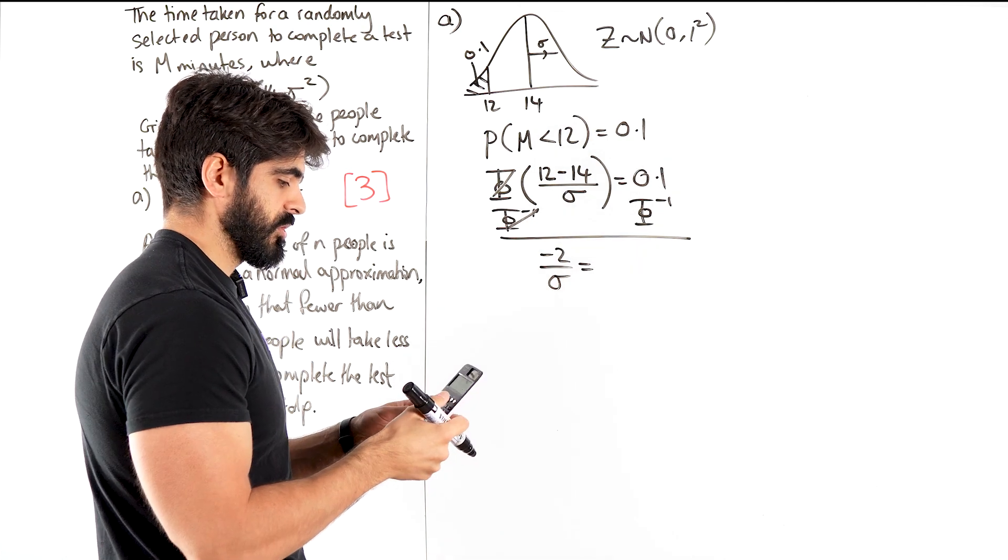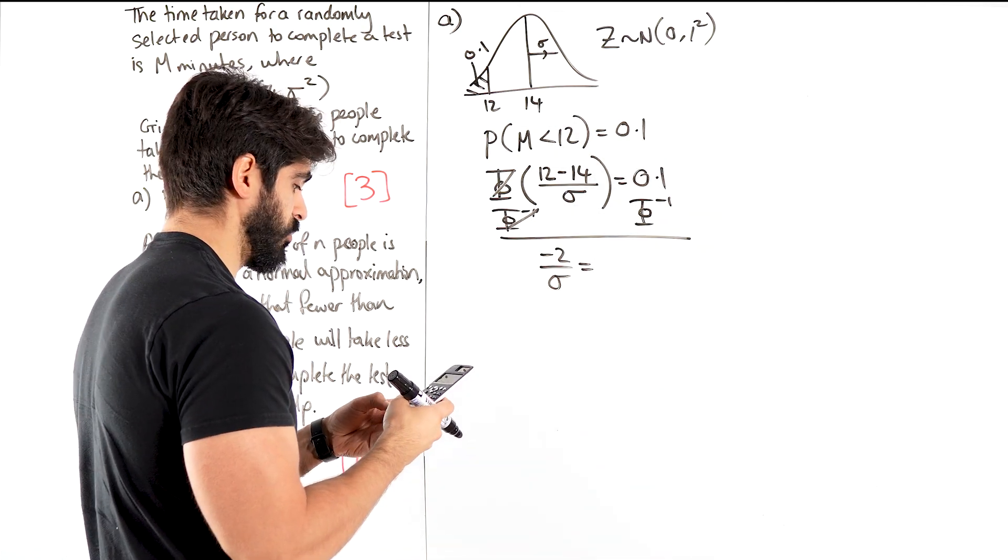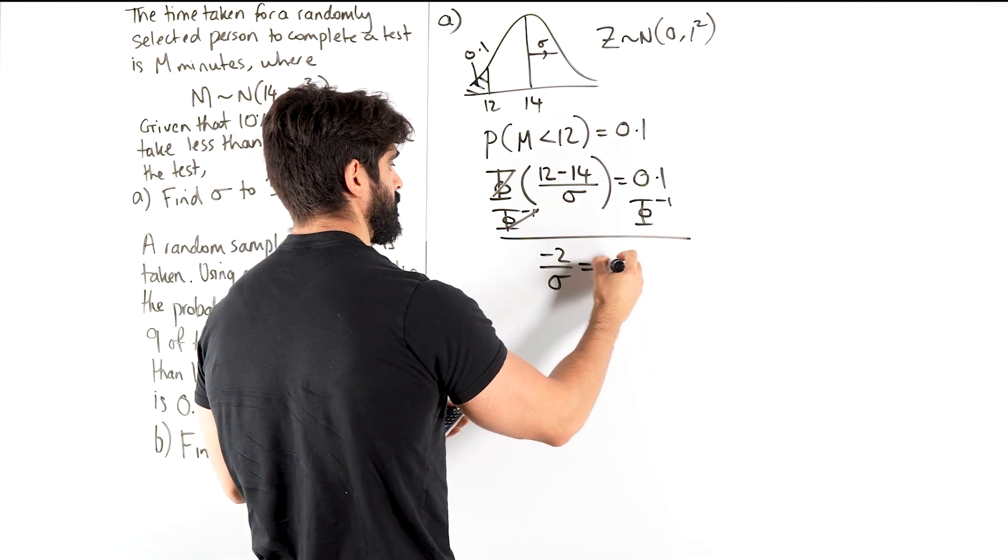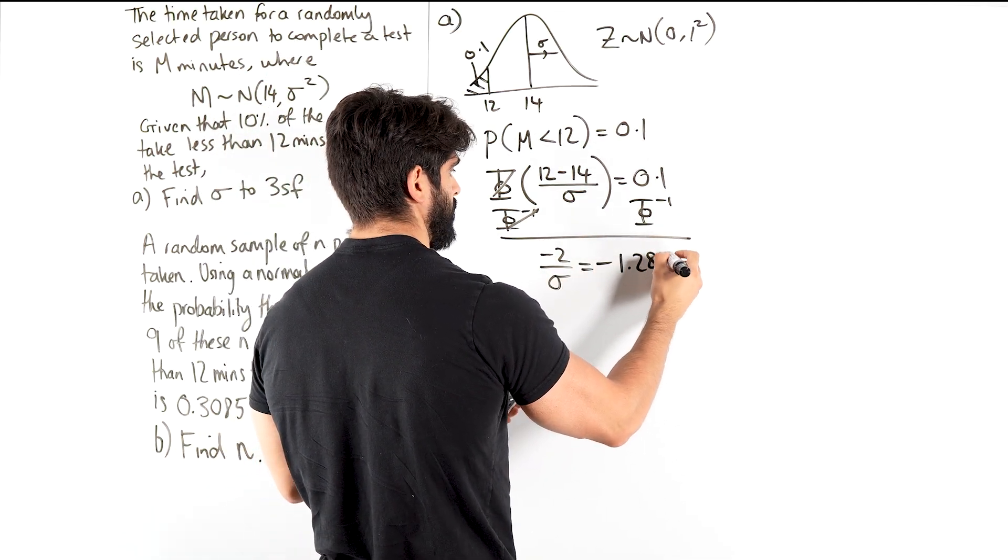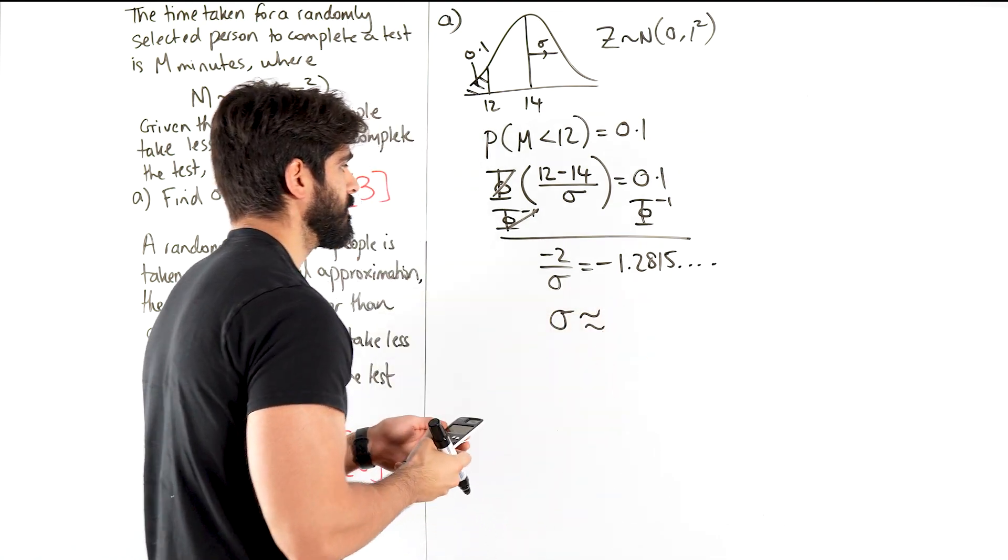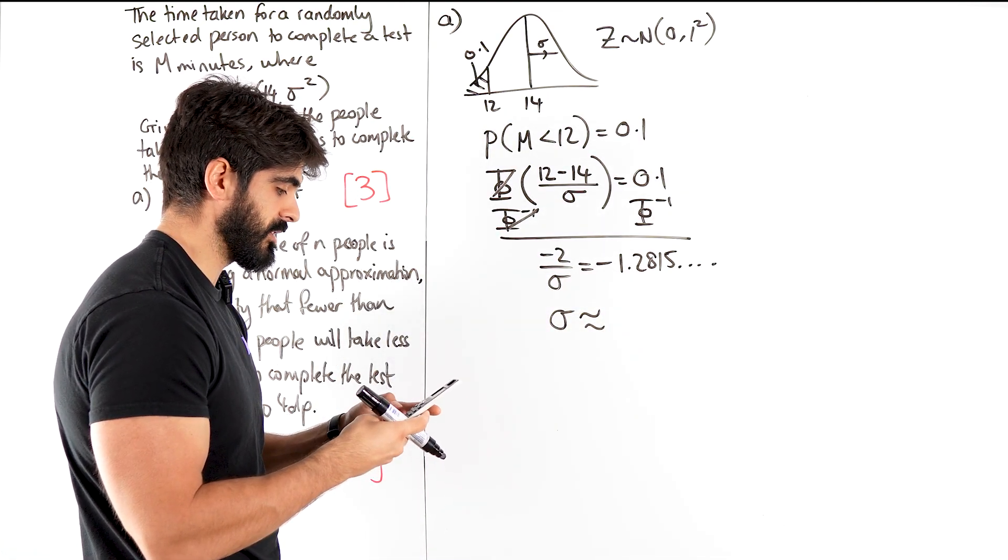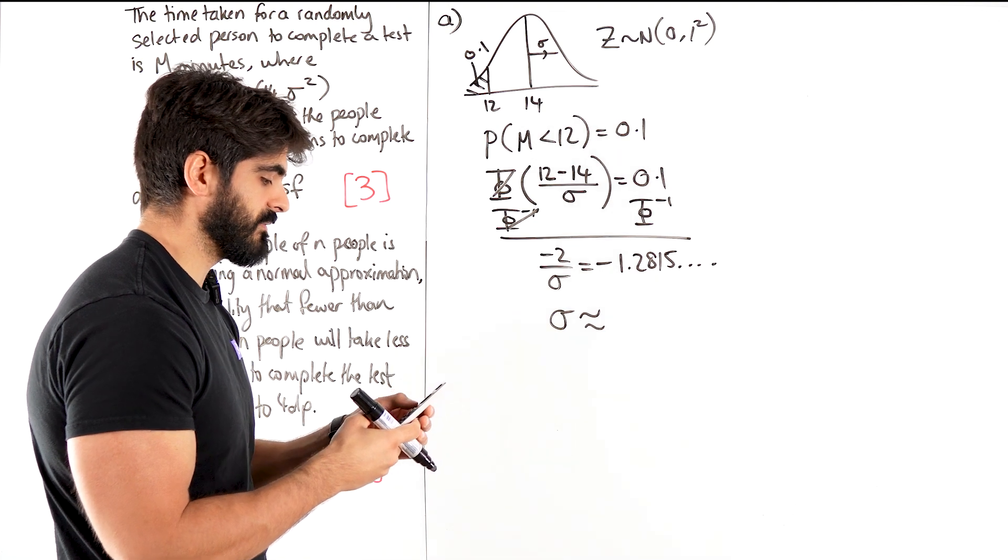So when you go into your calculator, you just go menu 7, inverse normal, type in your area 0.1, we get minus 1.2815. So sigma is about, so I'm going to do minus 2 divided by answer, minus 2 divided by the answer, 1.56.